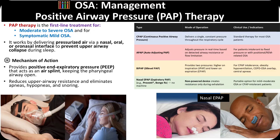Positive airway pressure therapy is the first-line treatment for moderate to severe obstructive sleep apnea and for symptomatic mild cases. It works by delivering pressurized air through a nasal, oral, or oronasal interface to prevent upper airway collapse during sleep. The mechanism involves providing positive end-expiratory pressure that acts as an air splint, maintaining pharyngeal patency, reducing airway resistance, and eliminating apneas, hypopneas, and snoring. Continuous positive airway pressure delivers a constant pressure and is standard for most patients, while auto-adjusting PAP adapts pressure in real-time for positional or REM-related apnea. Bi-level PAP provides different pressures for inspiration and expiration and is useful in CPAP intolerance, obesity hypoventilation, or COPD overlap. Nasal EPAP devices are non-powered, portable options that create resistance during exhalation for mild to moderate cases or for patients unable to tolerate standard CPAP.